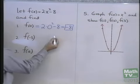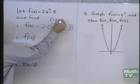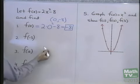So f(0) is negative 8. That means that the ordered pair, x equals 0, y equals negative 8, is a member of this function.